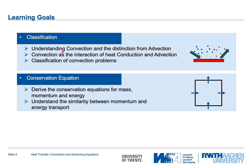We expect you to understand what convection is and how it is different from advection. Convection is the interaction between heat conduction and advection. Classification of convection problems means understanding the types of problems in engineering where convection plays a role. The second learning goal is understanding the conservation equations — how to derive them for mass, momentum, and energy — and understanding the similarity between momentum and energy transport.